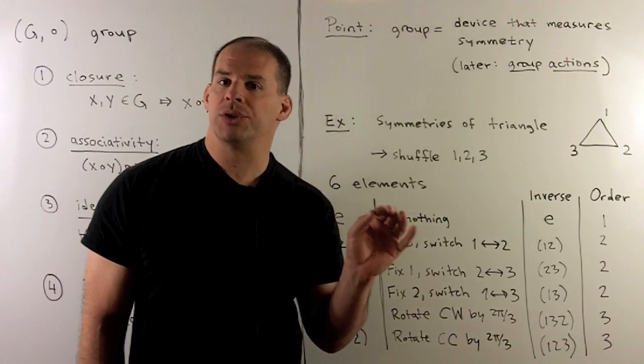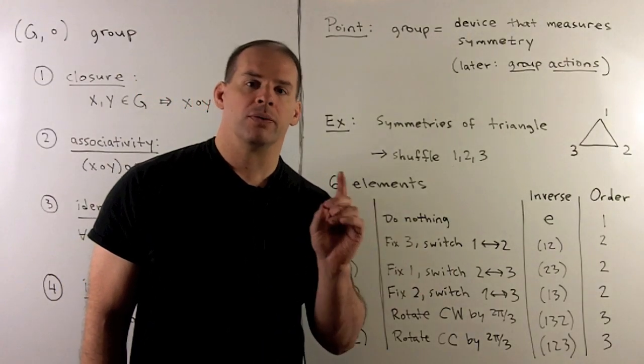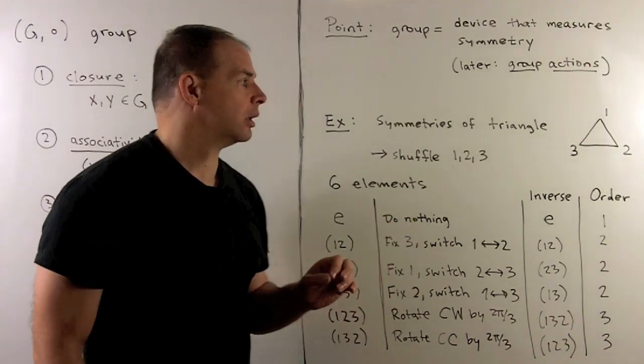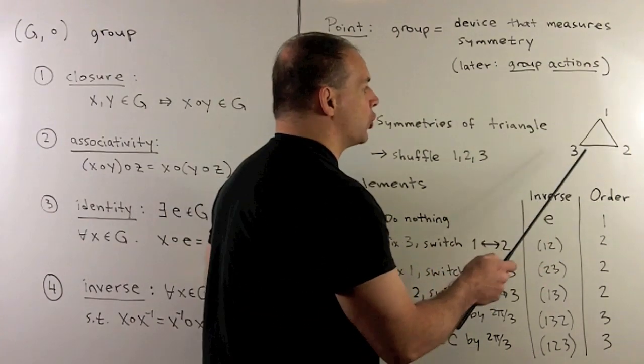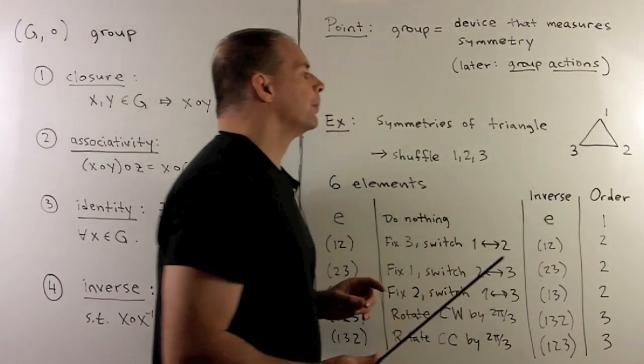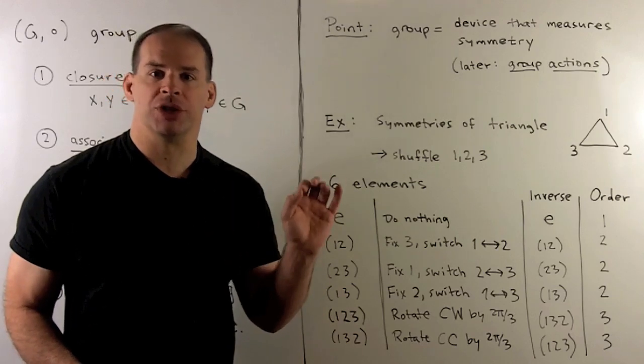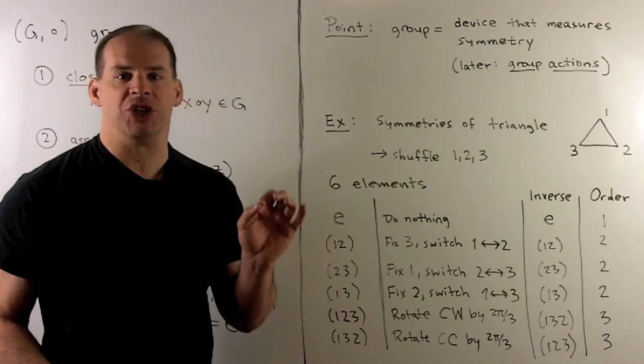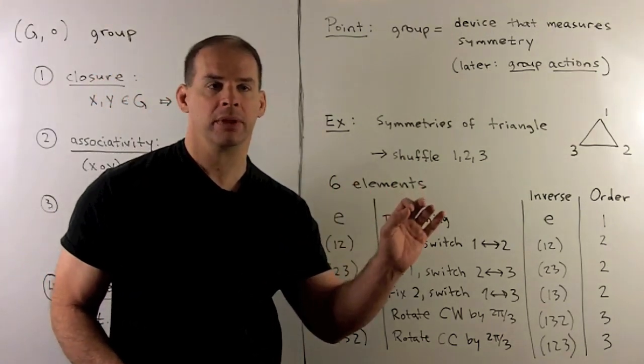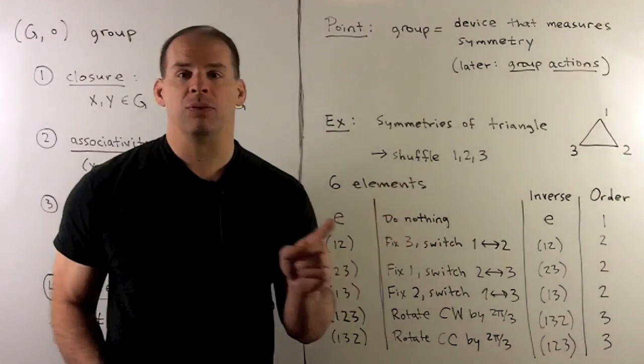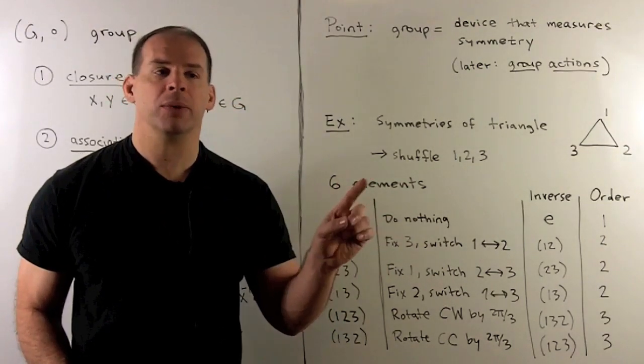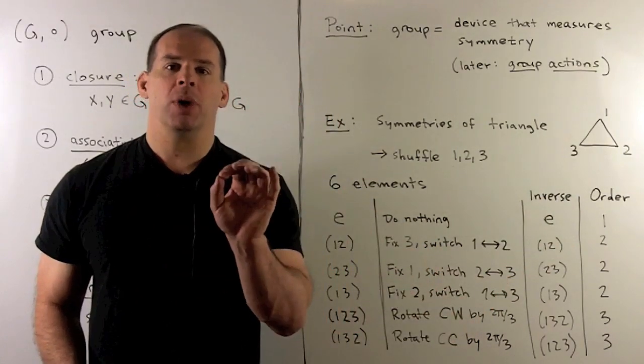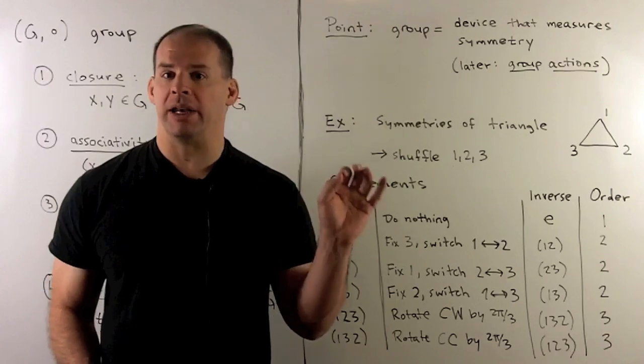We'll say more about symmetries later when we talk about group actions. Here, we'll jump in with the symmetries of an equilateral triangle. We'll label the vertices of our triangle 1, 2, and 3. Our group is going to be the set of symmetries of this triangle. Any symmetry of this triangle is going to induce a bijection from {1, 2, 3} to itself, and if we have any bijection from {1, 2, 3} to itself, we're going to get a symmetry of the triangle.